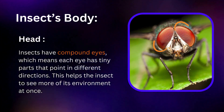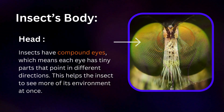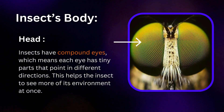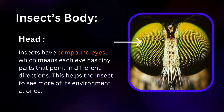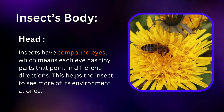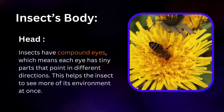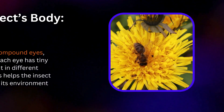Insects have compound eyes, which means each eye has tiny parts that point in different directions. This helps the insect to see more of its environment at once.